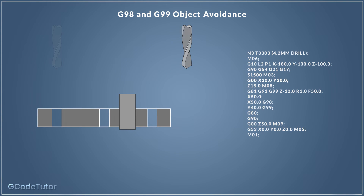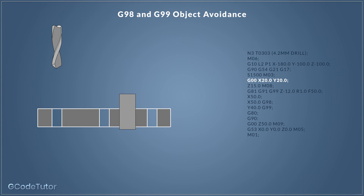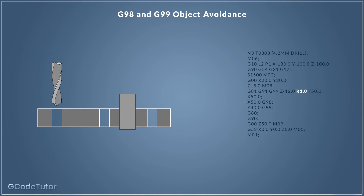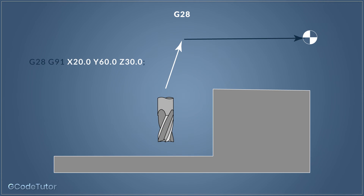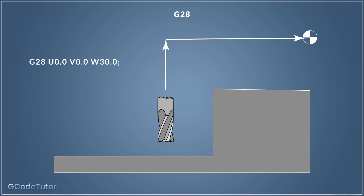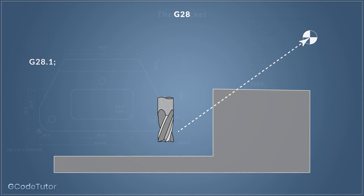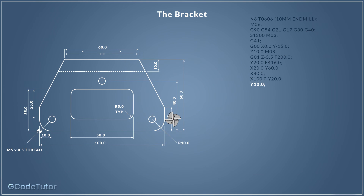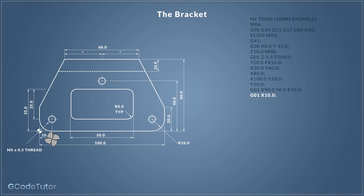We're going to be taking a look at object avoidance using G-98 and G-99 within these cycles, and also we're going to take a look at the G-28 reference return so we can return back to the machine zero point without hitting anything inside the machine. And on top of all this, we're going to finish with writing a full program that uses six tools that covers everything we've learnt during the course.